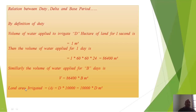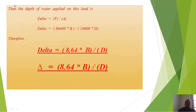Land area irrigated A equals 10,000 × D meter square (D is in hectares, converted to meter square). Then the depth of water applied on this land, delta, equals volume divided by area: delta = 86,400 × B divided by (10,000 × D). Therefore delta equals 8.64 × B divided by D. This is the relation between duty, delta, and base period.